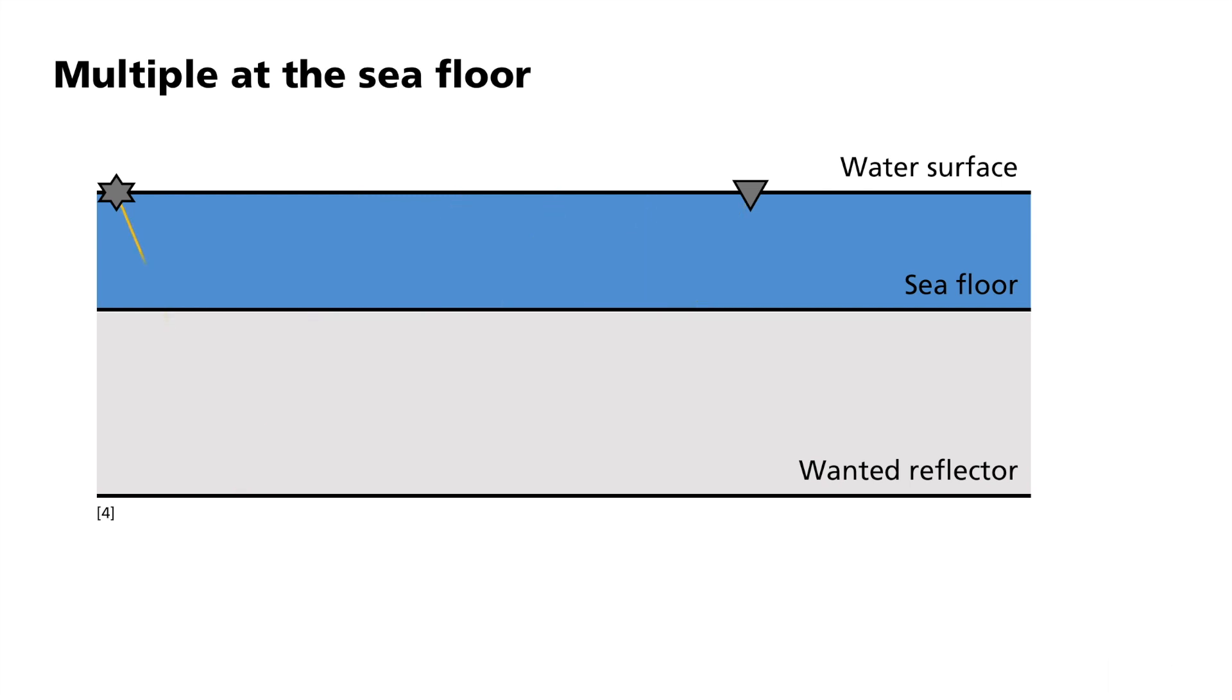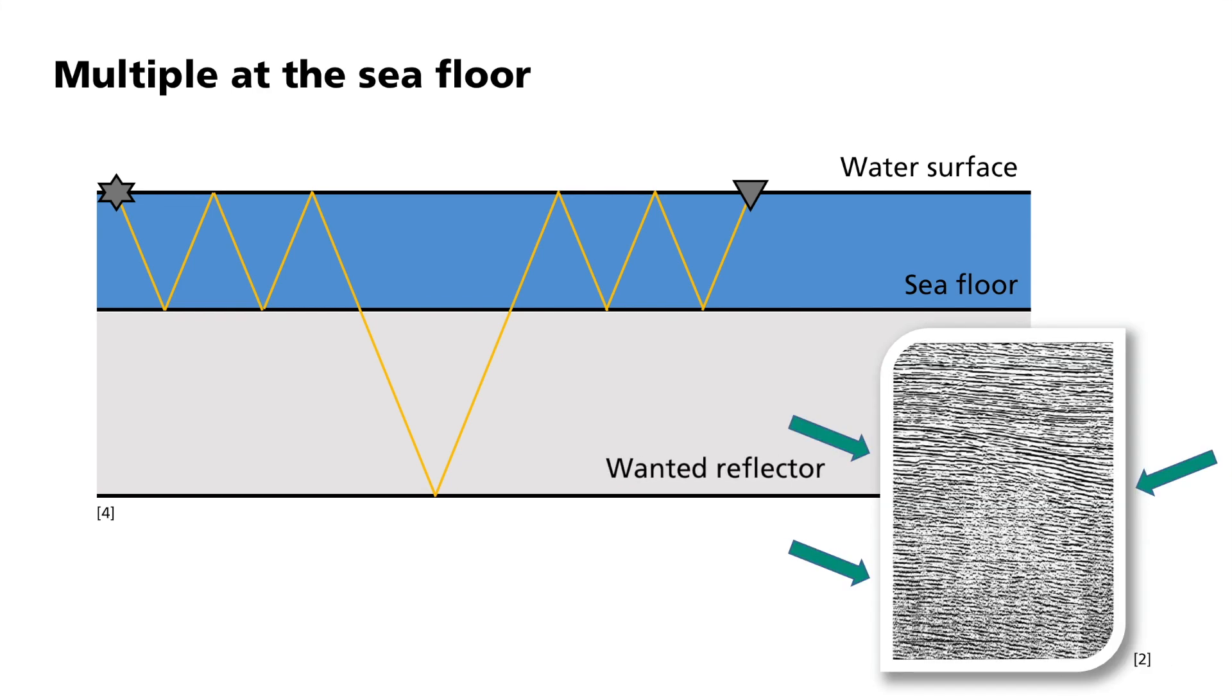Other parts of the signal are first reflected at the bottom of the sea. However, such reflections superimpose those waves originating from the desired reflector in the earth's subsurface. This reflection effect at the bottom of the sea is called reverberation. This explains repetitions in the seismic profiles as we just saw. If you know the travel time of these reverberations, they can be removed from the seismic profile.